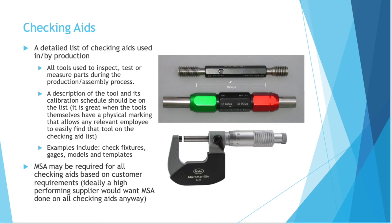Checking aids: a detailed list of checking aids used in or by production — all tools used to inspect, test, or measure parts during the production and assembly process. For all of these tools, the list will have a description of the tool and its calibration schedule. It is really great when the tools themselves have a physical marking that allows any relevant employee to easily find that tool on the checking aid list. Examples of checking aids include check fixtures, gauges, models, and templates. MSA may be required for all checking aids based on customer requirements, and ideally a high-performing supplier would want MSA done on all checking aids anyway.